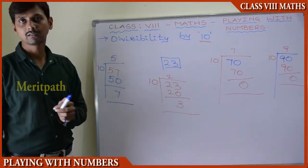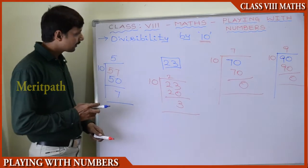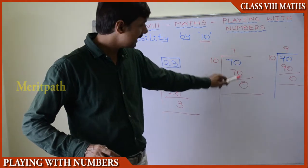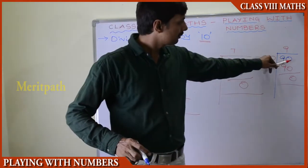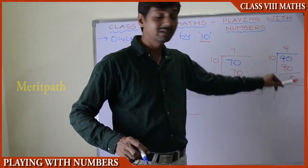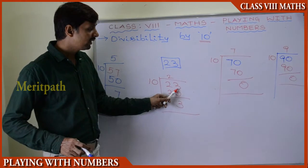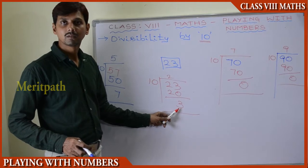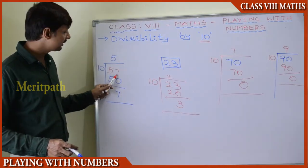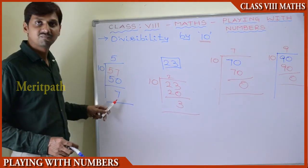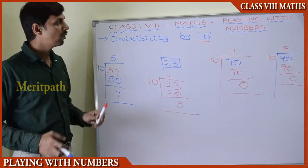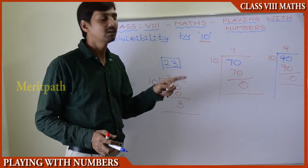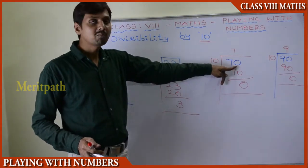By this example, what we understood is: when we divide by 10 and get remainder 0, it means when the units place is 0 we get remainder 0. When the units place has a number other than 0, we do not get remainder 0. So any two-digit number or any number having units place 0 is divisible by 10.